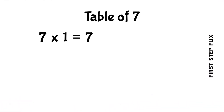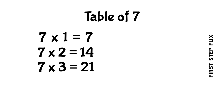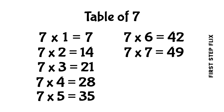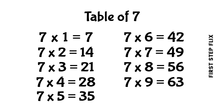Let's repeat. 7 ones are 7, 7 twos are 14, 7 threes are 21, 7 fours are 28, 7 fives are 35, 7 sixes are 42, 7 sevens are 49, 7 eights are 56, 7 nines are 63, 7 tens are 70.